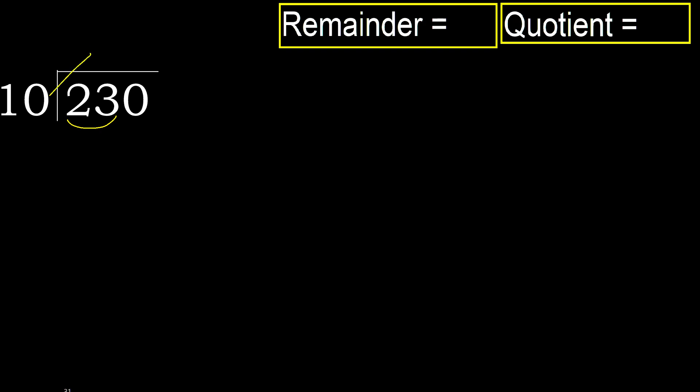Then multiply by which number is nearest to 23, but not greater. Multiply by 3 — 30 is greater. So multiply by 2.